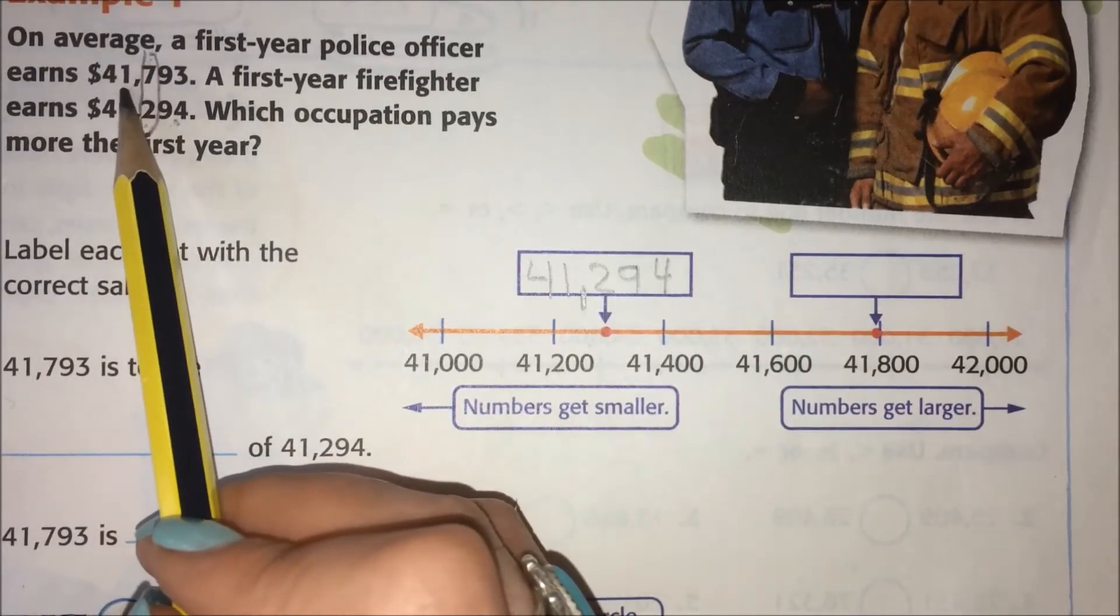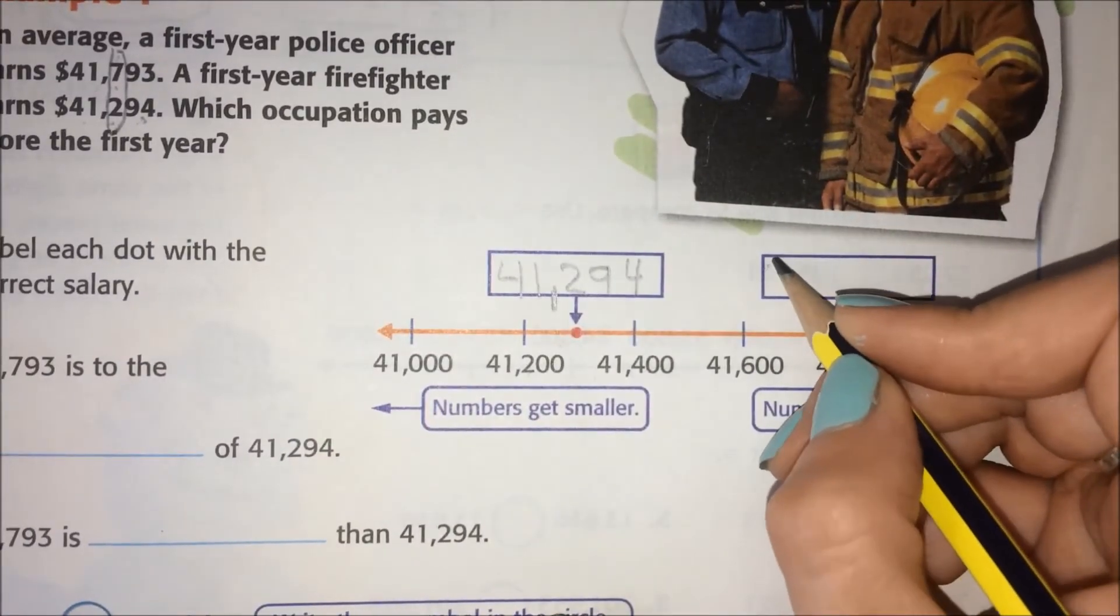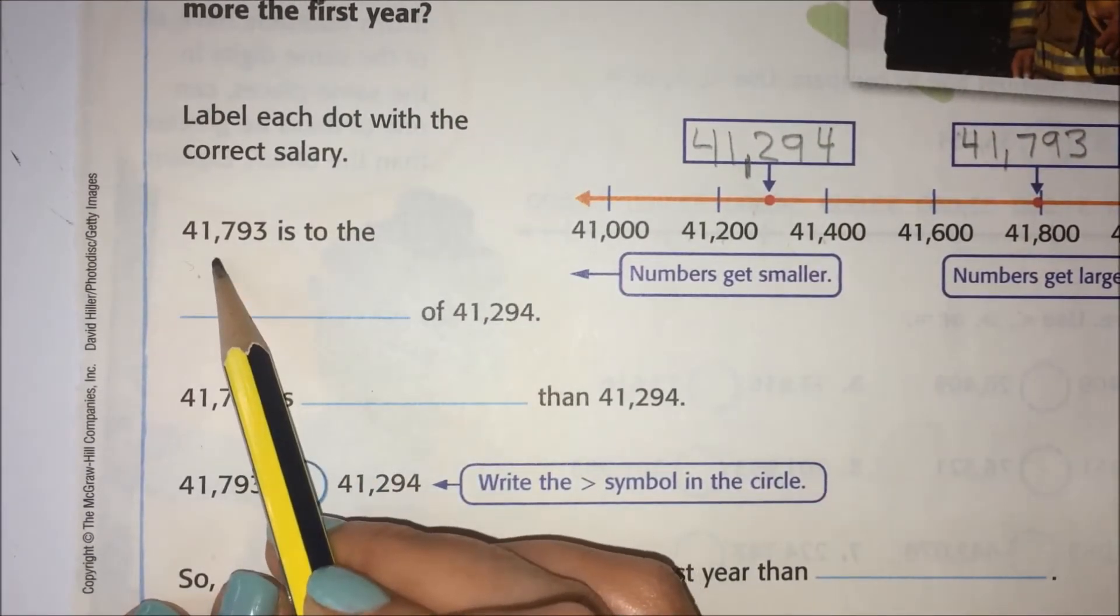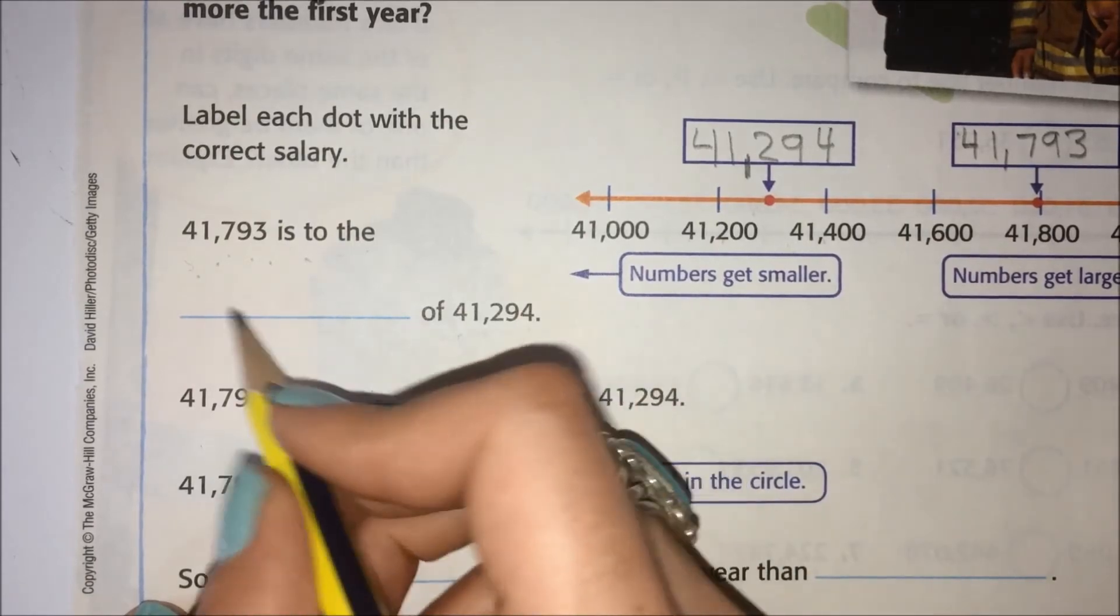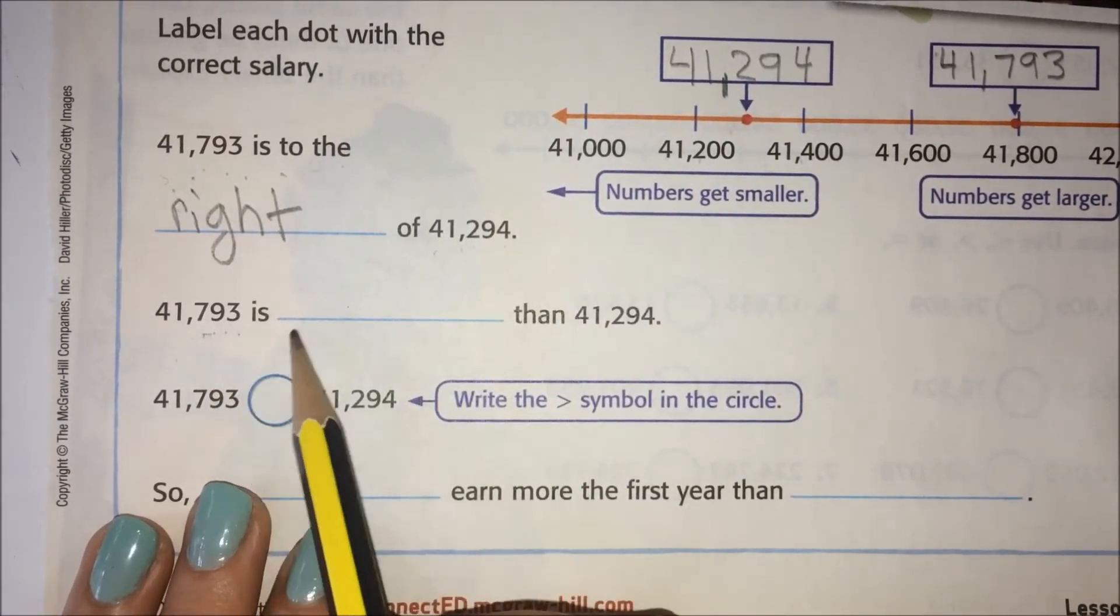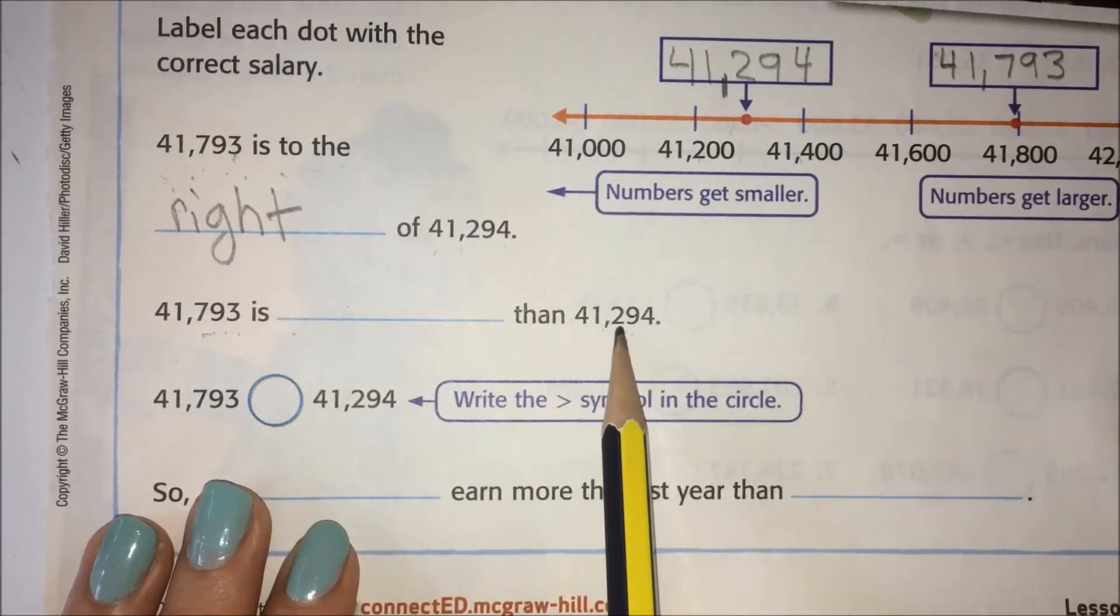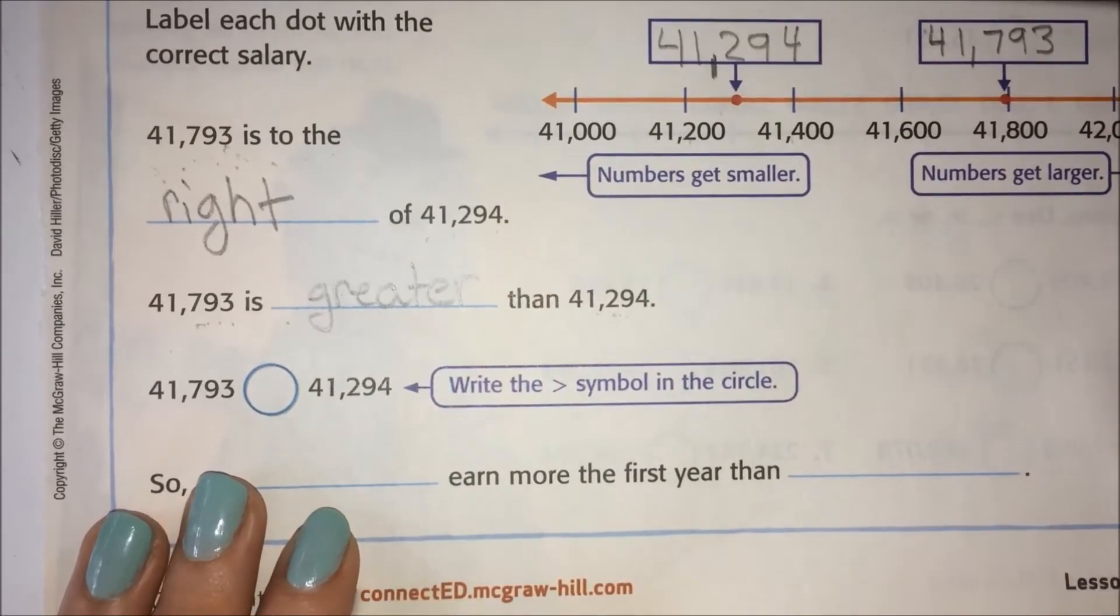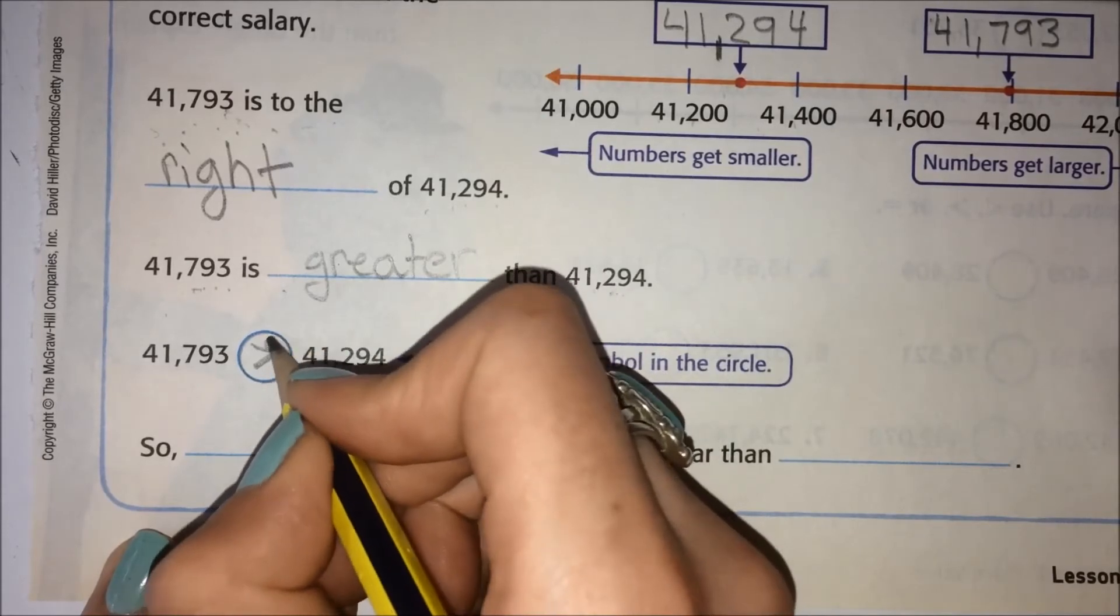And let's see, our police officer up here is almost to 800. And they put the dot almost to 800. So 41,793. Okay, 41,793 is to the right of 41,294. 41,793 is greater than 41,294. Well, since this one's almost 800 and this one's only 300, this one's bigger. So, they want greater. And now's where we get to use our chomping symbol. Greater than. I'm going to draw the little ion just for fun.